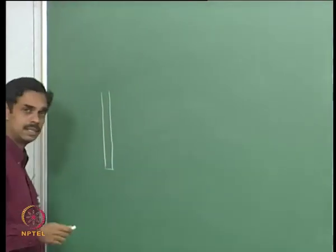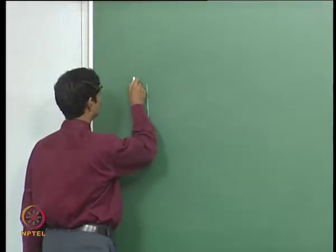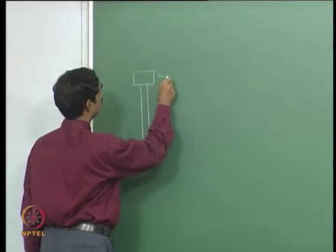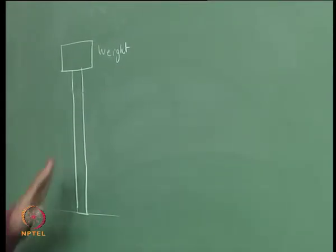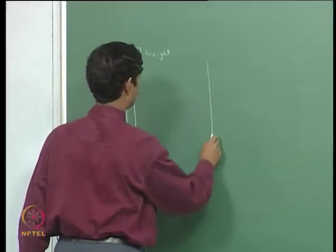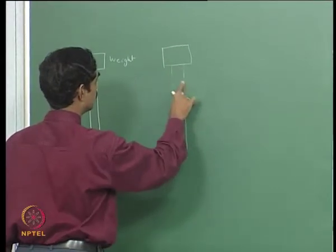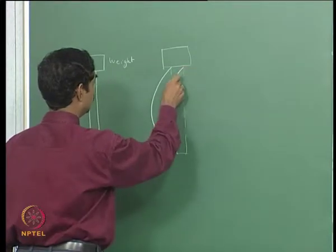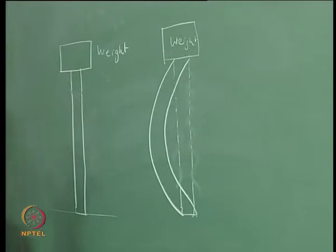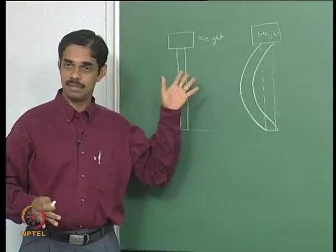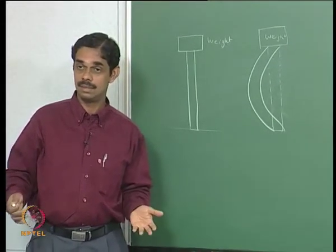In strength of materials or aircraft structures or civil engineering, you must have studied columns. You have a column with a weight on top. As opposed to a beam where you apply load and it keeps bending continuously, a column will stay upright. But as you keep smoothly increasing the weight, at some point the column will stop being upright and will suddenly start buckling. You keep increasing — everything is smooth — and then abruptly the column buckles.